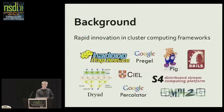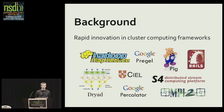I'm going to start with some background about the problem we're looking at. As everyone knows, there's been a lot of interest lately in large-scale computation on commodity clusters, because these clusters have become necessary to process the data in a lot of application domains. As a result, there has been a lot of innovation in systems for making these clusters easier to program — new programming models and implementations of those programming models.